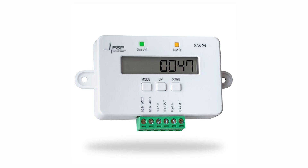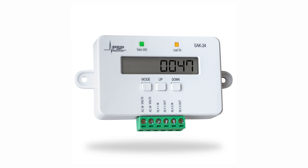The SAK24 allows load management of HVAC systems on a standby generator using the low voltage HVAC control circuits. It is powered by 18 to 30 volts AC, sourced from the low voltage transformer in the air handler. It has two sets of dry contacts that open and close together. The settings on the SAK24 are grouped by application, called master modes.